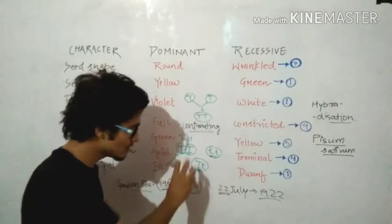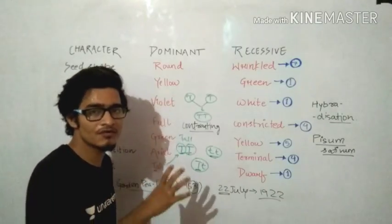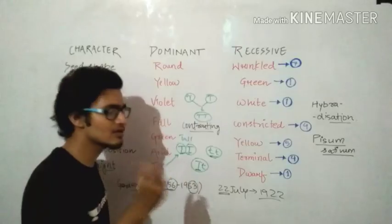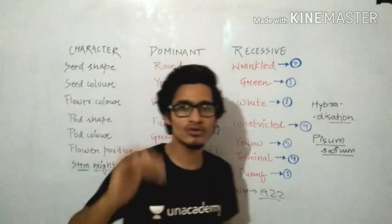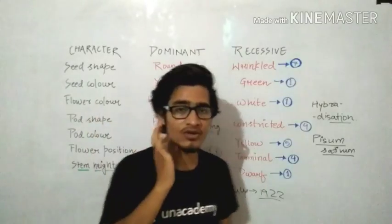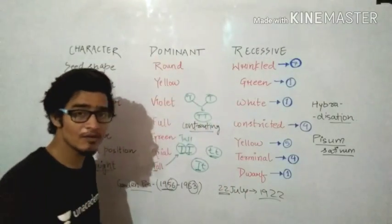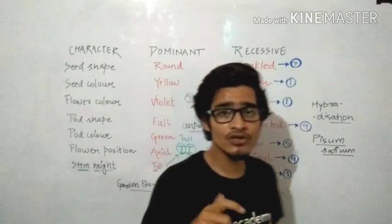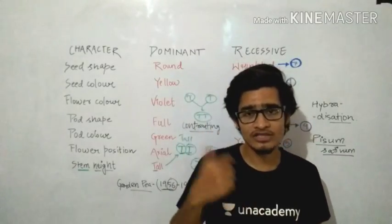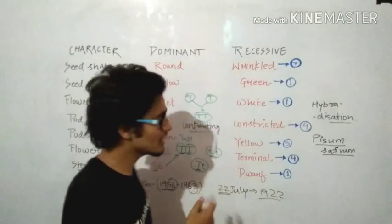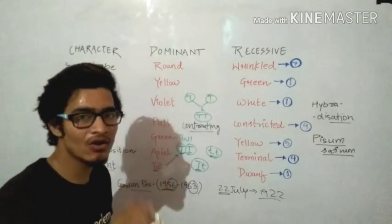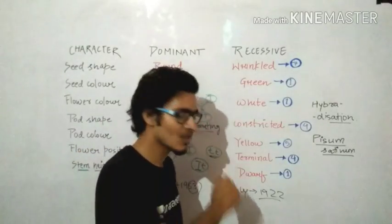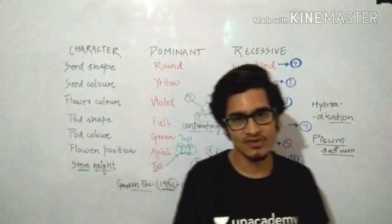Why? Because this particular term capital T is highly dominant on small t. So the capital T will express itself, the small t will not. The small t can only express itself when it is present with another small t, because there is no alternative option, they have to express. But in some cases where capital T is present, even a single capital T is enough to induce the character or the trait of tallness in a plant. So from this point, if two different types of alleles or two different kinds of genes are present together, the alphabet that is going to express itself is the dominant one, and the one whose expression is hiding or masked by the second one is recessive. This is the basic concept.